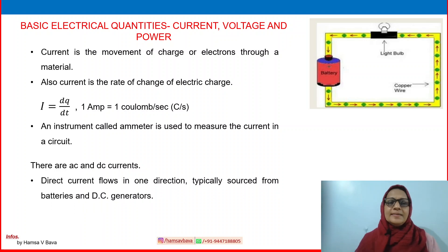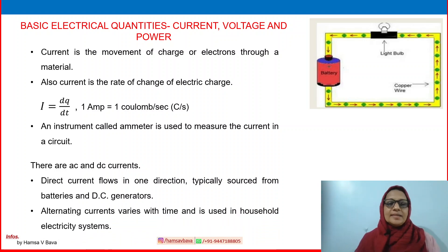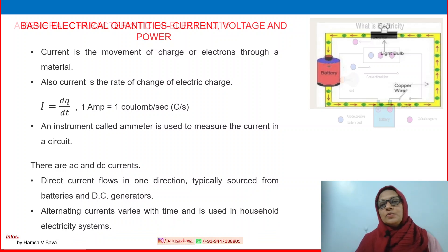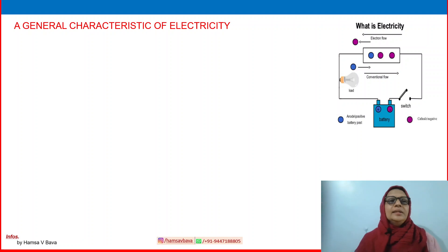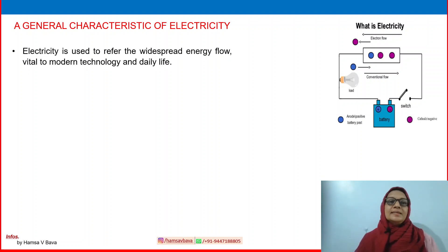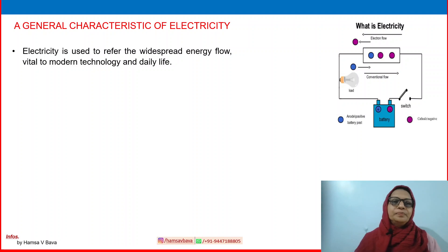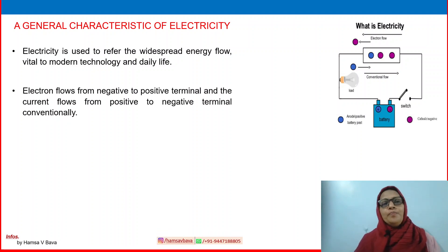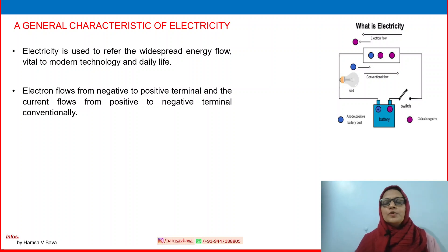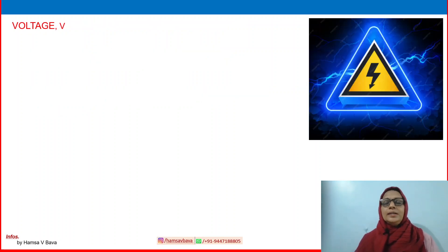There are alternating current and direct current. As the name implies, direct current flows in one direction, typically sourced from batteries and DC generators, while AC varies with time and is used in household electrical systems. Regarding general characteristics of electricity: electron flows from negative to positive terminal, and conventionally the current flows from positive to negative terminal.